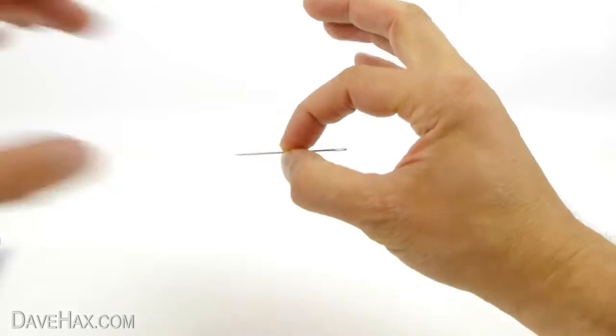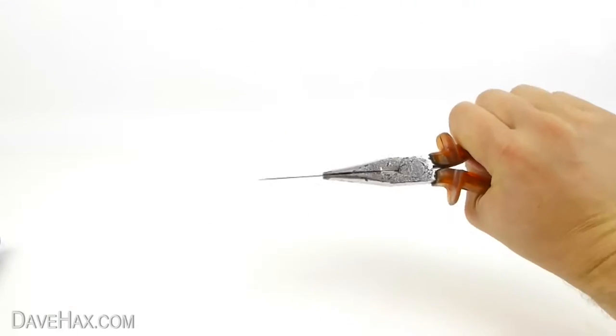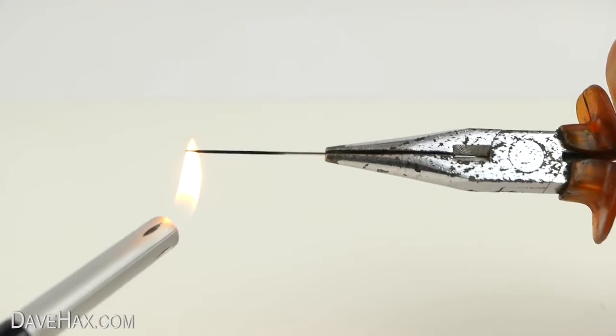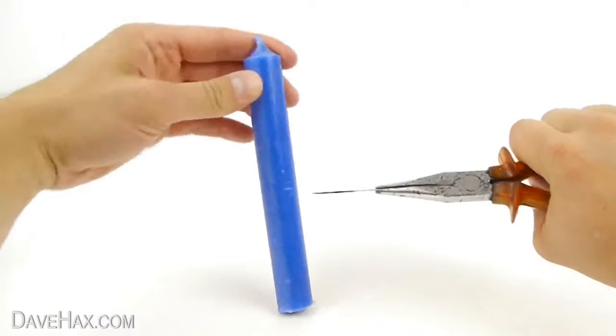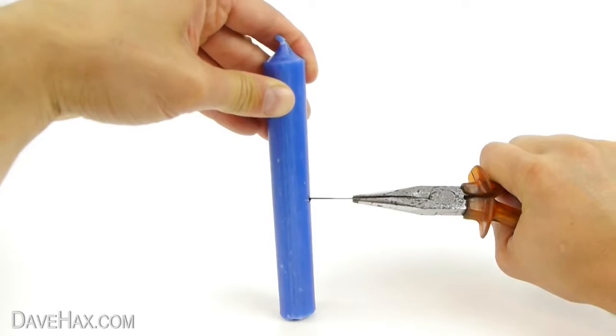Then take a needle, grip it firmly with some pliers and use a lighter to heat it up. Then push it straight through the middle of the candle on the balancing point where we made the mark.